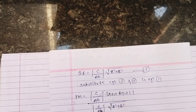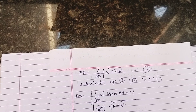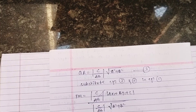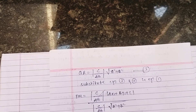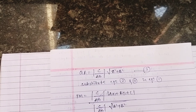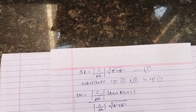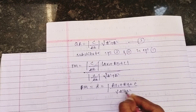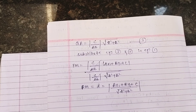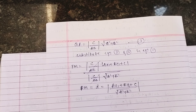The common term c/ab cancels from numerator and denominator, giving PM = |ax₁ + by₁ + c| / √(a² + b²). Since PM is also called d, the perpendicular distance is d = |ax₁ + by₁ + c| / √(a² + b²). Hence this is the proof of the formula for the length of perpendicular from point (x₁, y₁) to the line ax + by + c = 0.